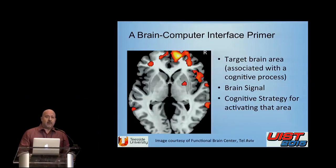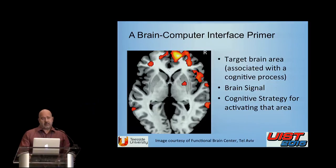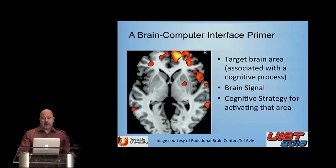A quick reminder of the basics of BCIs: if you want to develop a brain-computer interface, you essentially need three things. You need to identify a target brain area, ideally associated with a cognitive process. You need to be able to capture a brain signal, ideally not too noisy and in real time, and you need the subjects to have a cognitive strategy to activate that area.